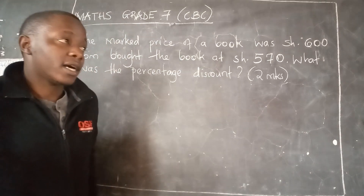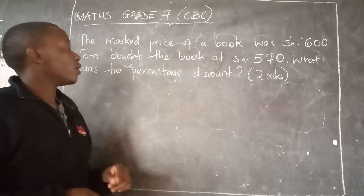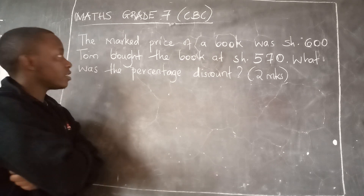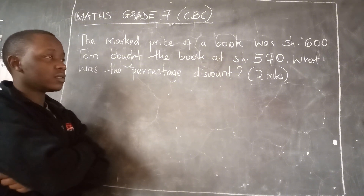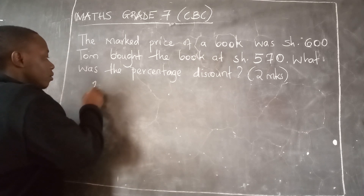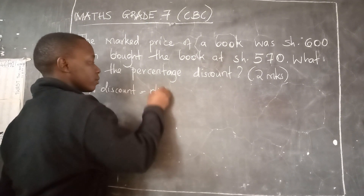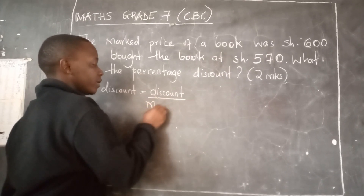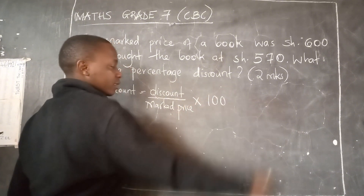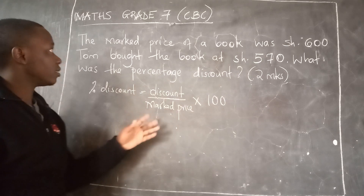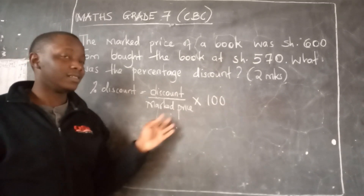Hello, this is discount for Grade 7. This is a question they like testing in mathematics. The question says the marked price of a book was 600 shillings; Tom bought the book at 570 shillings. What was the percentage discount? Percentage discount is given by: discount over the marked price, multiplied by 100%. Now we have the marked price of 600 shillings, and 100 is a constant that does not change.